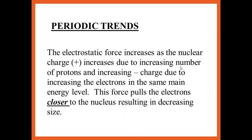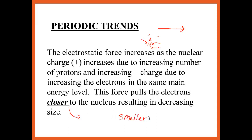Let's look at those trends that you already graphed. Periodic trends — this means going across a period. Look at what happens: you're getting more positives in the nucleus. As you're going, you're getting more electrons, but they're going into the same energy level — 2p1, 2p2, 2p3, 2p4. There's a force pulling it in because they all fill the attraction, so they get closer. You go across the period, they get smaller, because they're able to feel more of the pull from the protons as you go across the period.